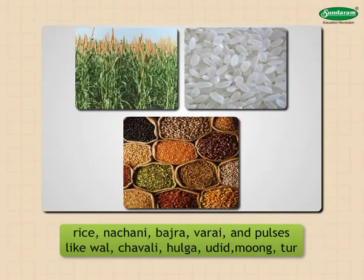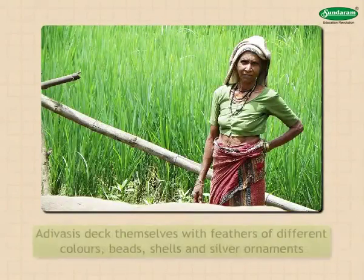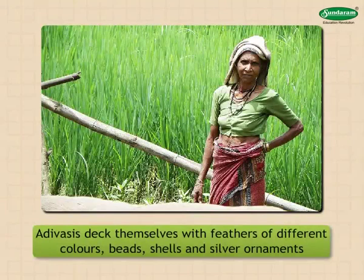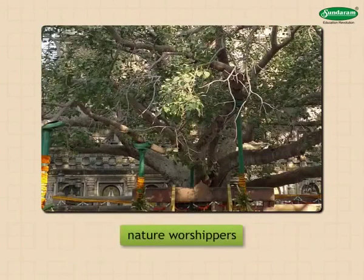The tribal attires have a good deal of variety. Men use short dhoti, bandi, and turban, while women use sarees or their traditional costumes. Adivasis deck themselves with feathers of different colours, beads, shells, and silver ornaments. Recently, in some parts, men have started using shirts and trousers. Adivasis from different parts speak different dialects. Most Adivasis are nature worshippers and their deities' names are related to nature.